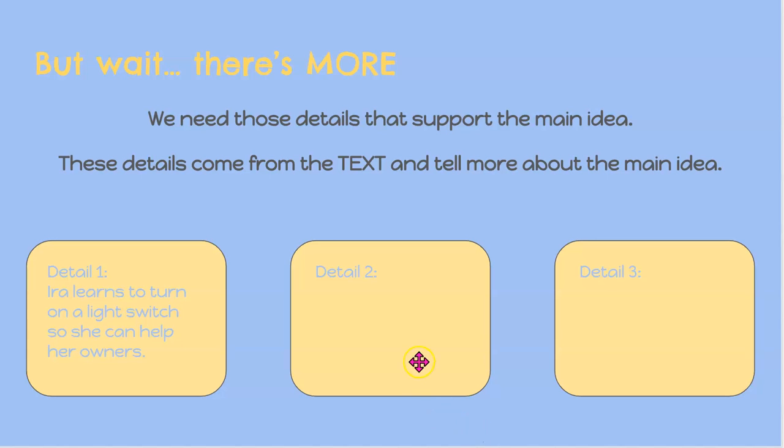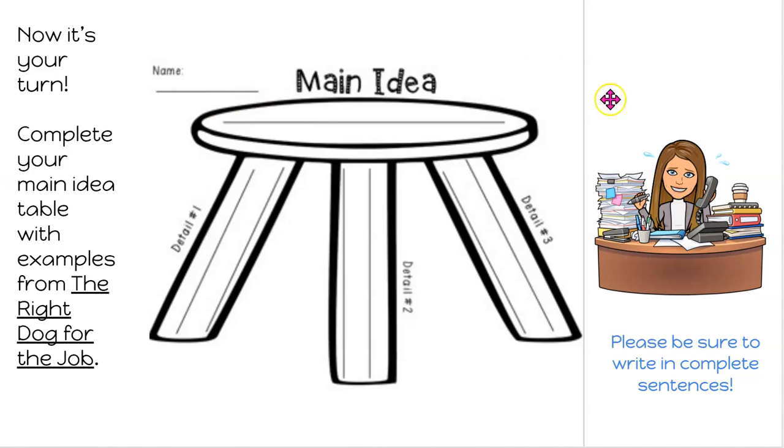Now I would need to find at least two more of those details in my text. If I am not able to find three details to support my main idea, I need to stop and think if I have chosen the correct main idea. If there are no details in the story to help support it, there is something that is more important about our text that would be considered our main idea. So please keep that in mind as you are creating your own main idea table.